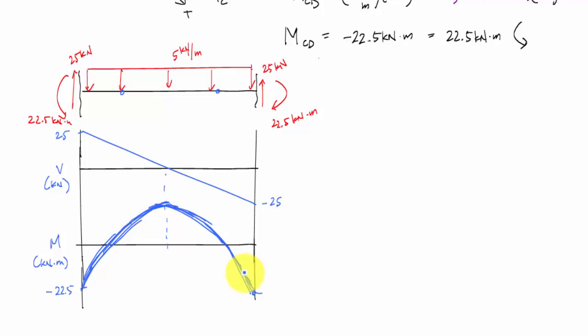In any case, here's what it looks like. I could determine the max value right here. Look at the area here. So one half base times the height. This distance right here is five meters. So one half is 25 times five, which is 62.5 kilonewton meters.